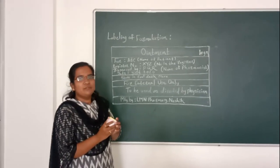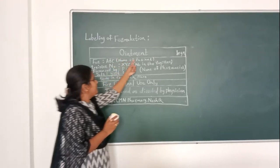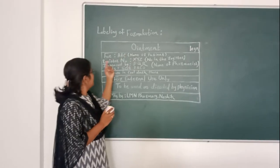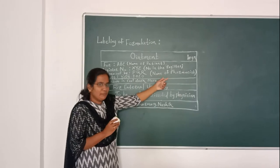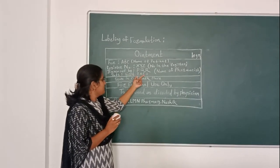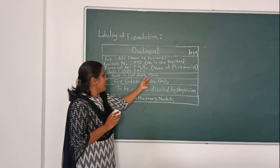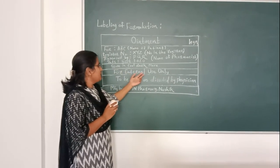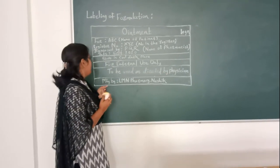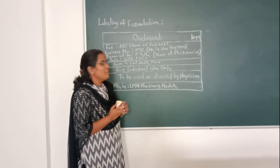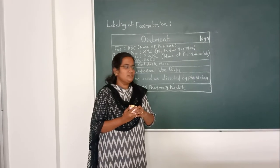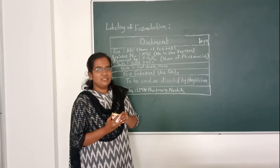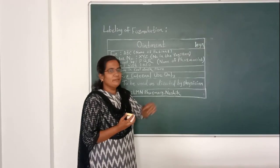After proper mixing, we transfer the ointment into the container and proceed to the labeling part. The label includes: name of patient, register number, name of pharmacist, date (September 2020), storage condition — store in a cool place — and instructions for external use only, to be used as directed by physician. Result: 10 gram of sulfur ointment is submitted in a wide-mouth jar for inspection, with special instruction on the label: 'For external use only.' Thank you.